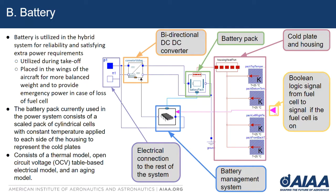The battery is utilized in the hybrid system for reliability and satisfying extra power requirements. We're only going to use the battery during takeoff, landing, and taxiing. It'll be placed in the wings for more balanced weight and to provide emergency power in case of loss of fuel cell or a failure in the HTS line. Here is what the battery system looks like in Dymola right now. We have a bi-directional DC to DC converter and the battery management system to control when the battery is charging and discharging, as well as a connection to the rest of the grid. The battery pack is shown inside the green box and is connected to a housing heat port, which models the cold plates to cool the system. The battery is a scaled pack of cylindrical cells that consists of a thermal model, an open circuit voltage model, and an aging model.